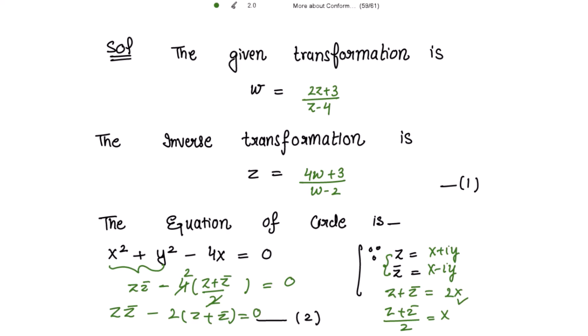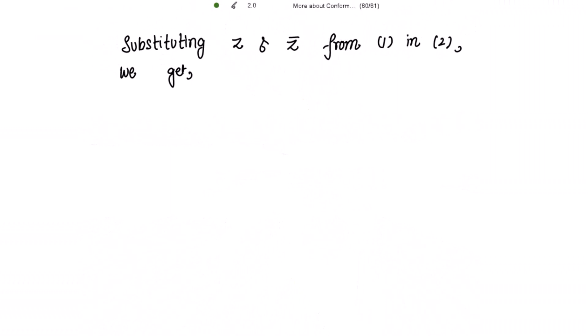And now in the next step we are going to use this inverse transformation in this equation and write the value for z and z̄. Substituting z and z̄ from (1) into (2), we get z is 4w plus 3 divided by w minus 2, times z̄ which is 4w̄ plus 3 divided by w̄ minus 2, and then we have minus twice z plus z̄. So z is 4w plus 3 over w minus 2 plus z̄, that is 4w̄ plus 3 over w̄ minus 2, equals 0.